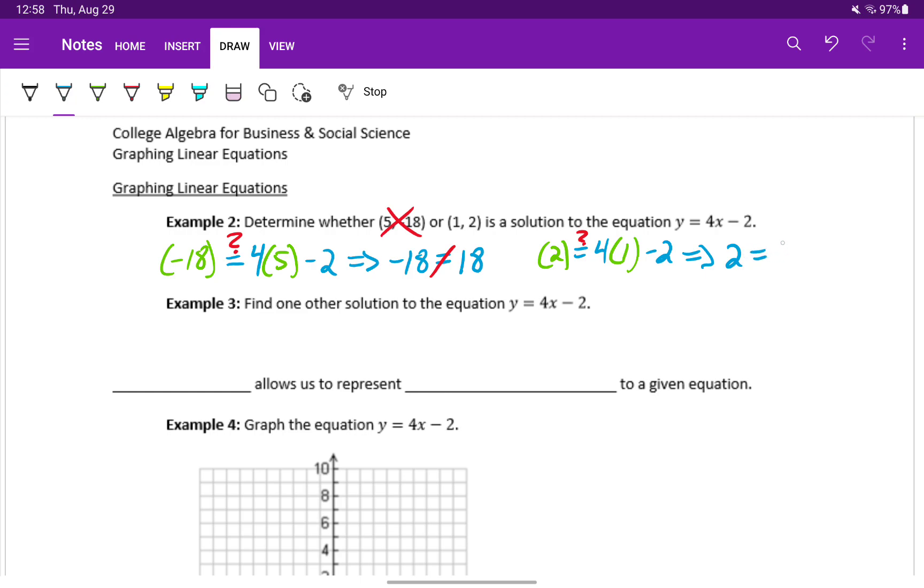In this case, we'll get 2 equals 4 minus 2, or 2. That checks out. That's a true statement, meaning that 1 comma 2 is a solution to this equation.